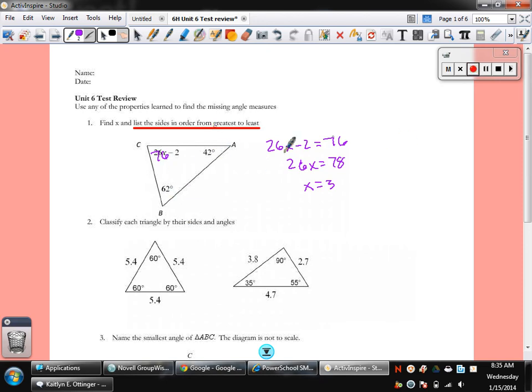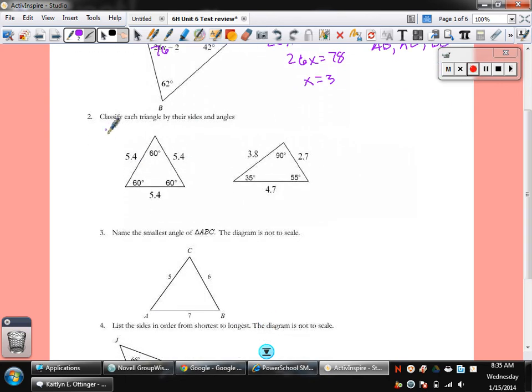Greatest to least, the side. So, the biggest side is across from the biggest angle, that's AB. Medium side across from the medium angle, bless you, is AC. And the smallest side is across from the smallest angle, that's BC. And bless you as well.